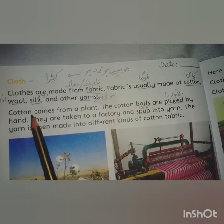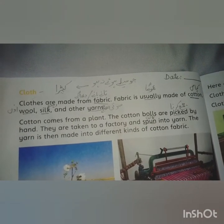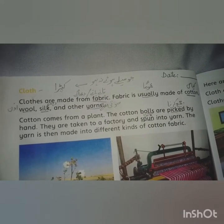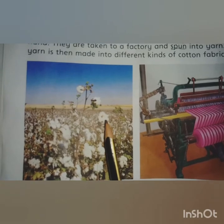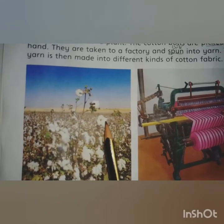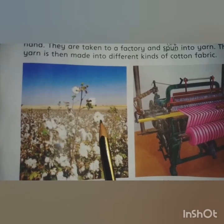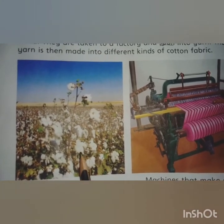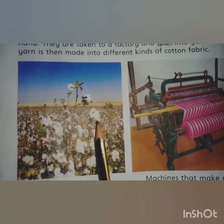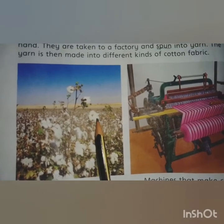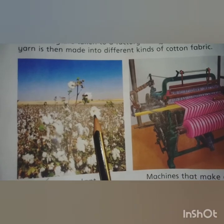Cotton comes from a plant. You must have seen a cotton plant. If not, there is a picture in your book. This is a cotton plant — you can see cotton growing on it. It is very soft, like fluffy cotton wool. These plants are grown, then flowers come, buds appear, and when the buds open, inside them are cotton balls, which are very soft.